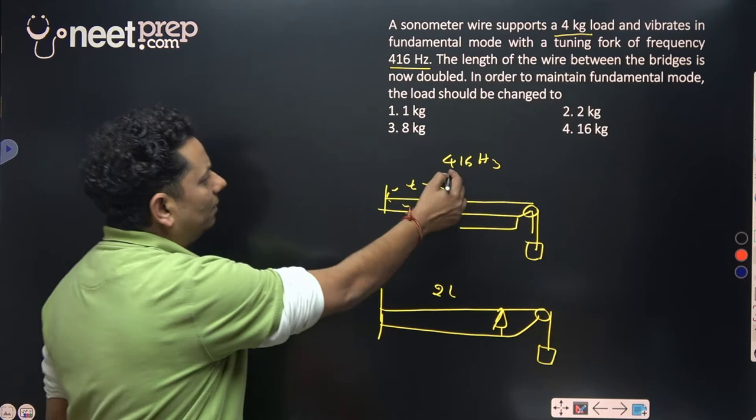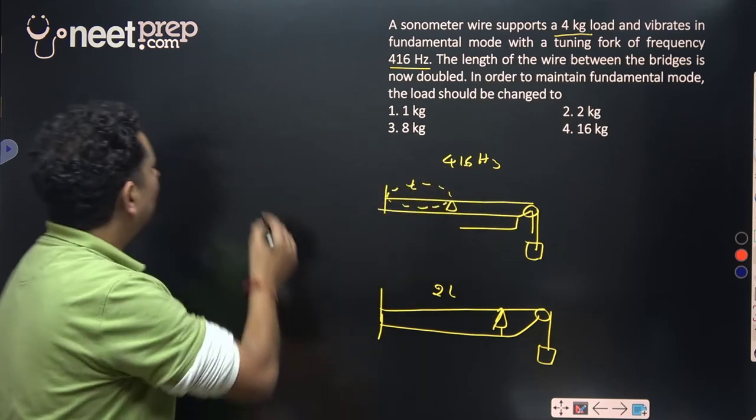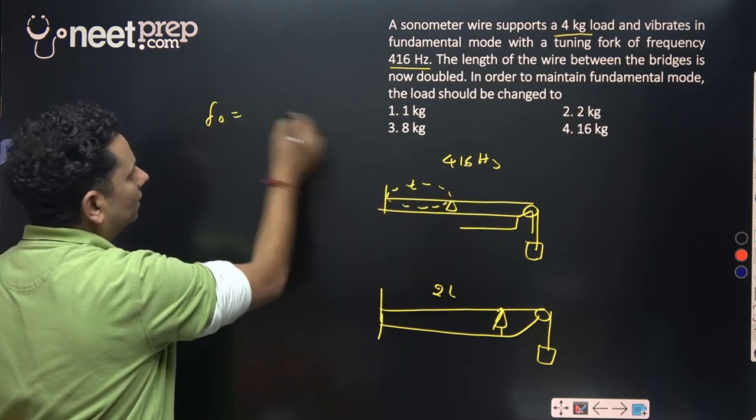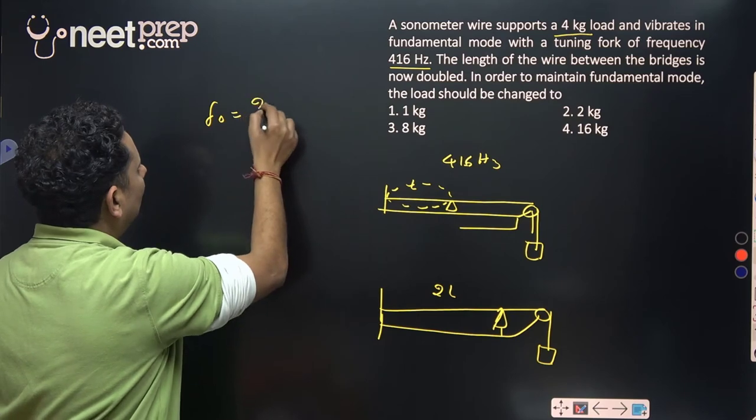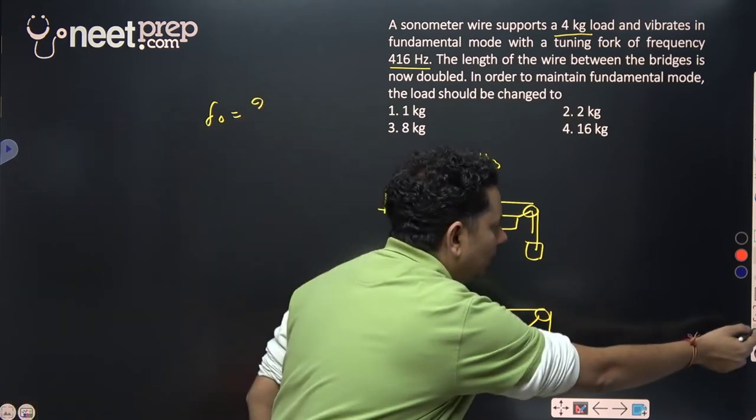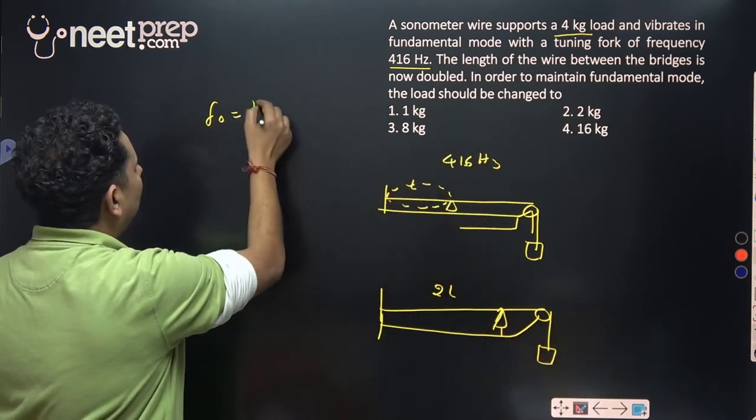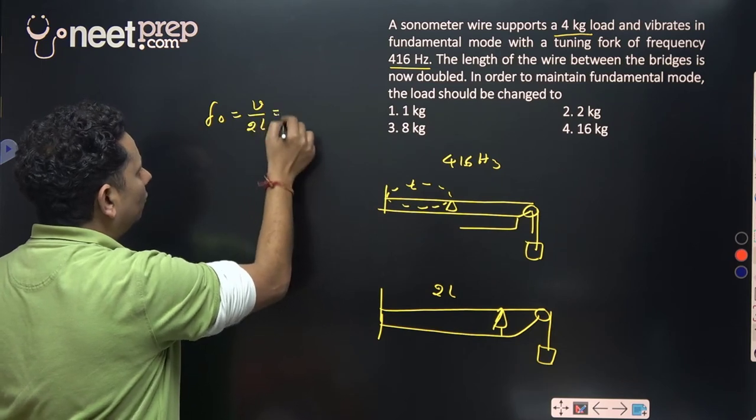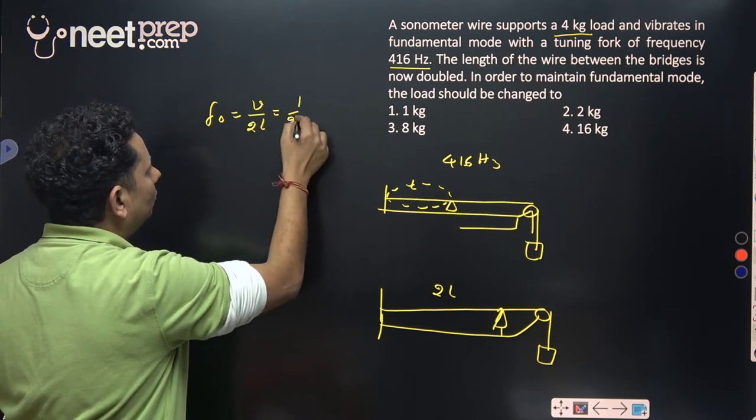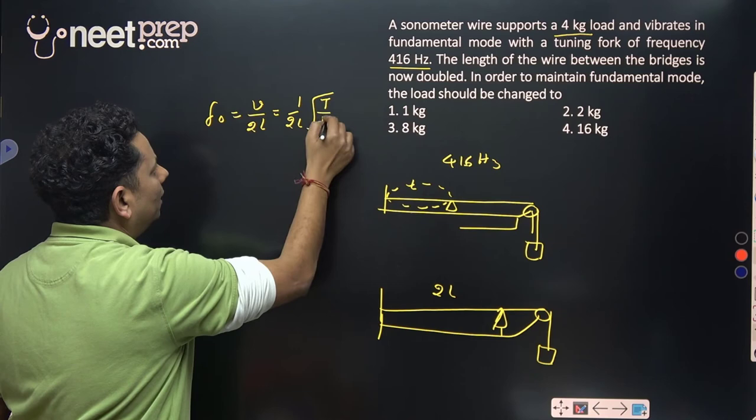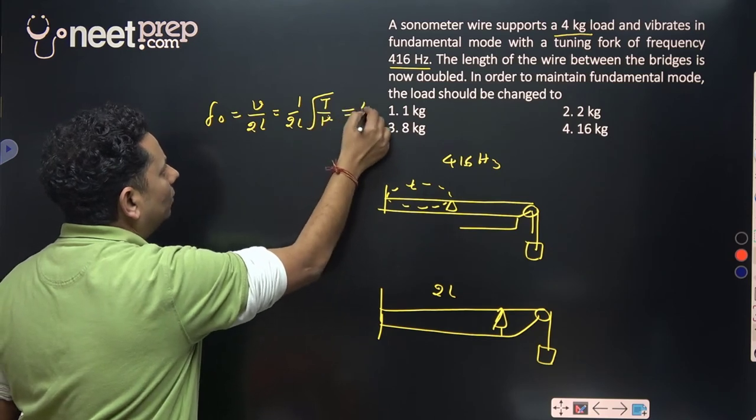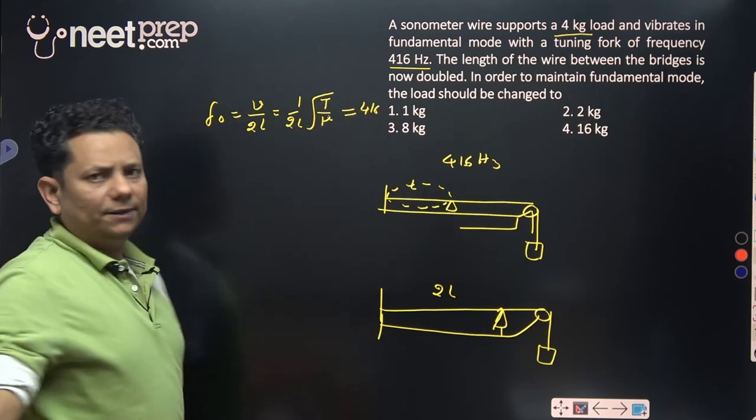In the fundamental mode, the frequency is 416 hertz. We can say f₀ equals V by 2L times the square root of T by μ, and this value is 416.